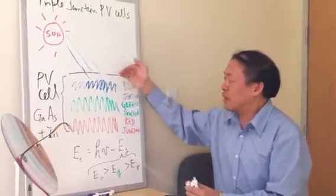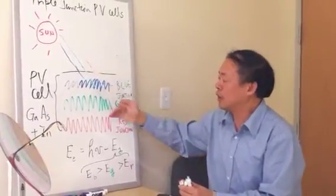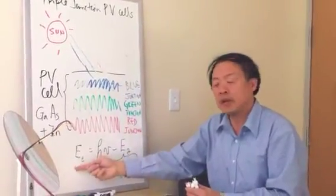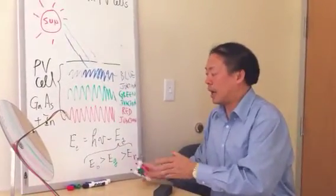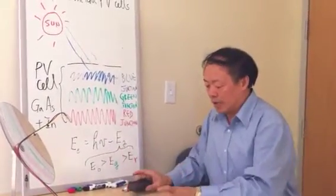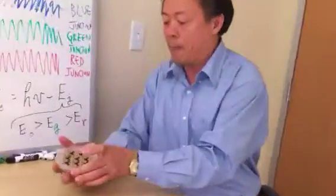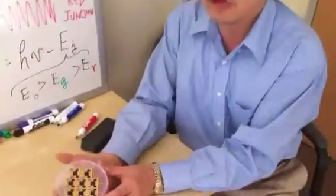By this selective absorption, according to the three layer, you minimize the amount of heat that is wasted in the absorption process. Here we show these triple junction photovoltaic cells that is manufactured by MCOR.